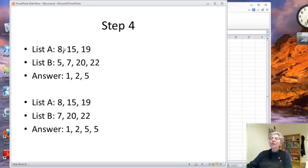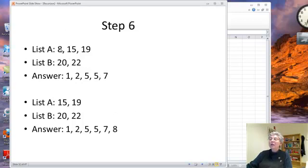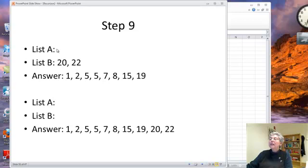Now 5 is smaller than 8, so the second 5 goes into the answer. Next, the 7 is the smaller one, so that goes in the answer, leaving this. Now 15 is smaller than 20, so we put 15 in the answer. 19 is smaller than 20, so we put 19 in the answer. And now list A is empty, so we know we can just put the remainder of list B into the end of the answer, and that's our final step.